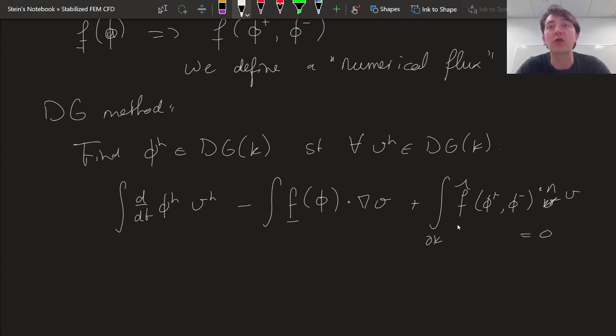With that flux you couple the elements from either side and you get a global method that defines the solution everywhere.